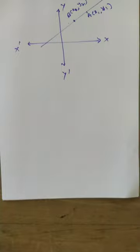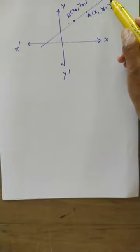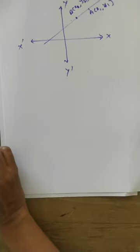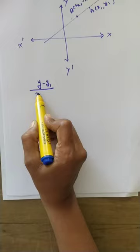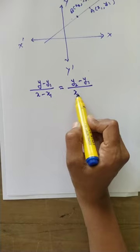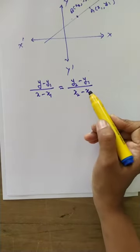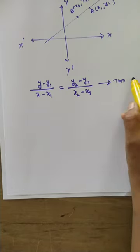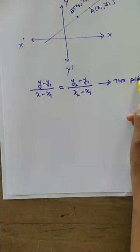Slope is not given, angle is also not given. The angle of inclination theta is not given, so we cannot find slope directly. Only two points are given, through those two points the line passes. The equation is given by the formula: y minus y1 divided by x minus x1 is equal to y2 minus y1 divided by x2 minus x1. This is called the two point form of equation of straight line.